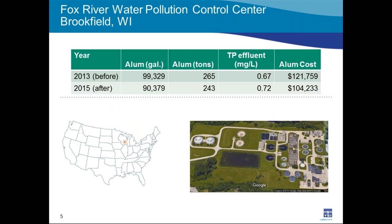The Fox River Water Pollution Control Center in Brookfield, Wisconsin is a water resource recovery facility that uses chemical P removal. Brookfield is geographically unique — it straddles a subcontinental divide, and wastewater from the east side of the city flows to the Fox River facility. It's an activated sludge plant with tertiary filtration — that's where the phosphate analyzer is located. It's designed for an average daily flow of 12.5 million gallons per day, but can handle peak wet weather flows of up to 50 MGD.